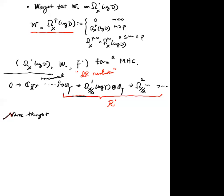The naive W-filtration candidate: define W_m on Ω^p_{X/Δ}(log Y)|_Y as the image of W_m Ω^p_X(log Y) restricted to Y. However, after some computation one can verify that the Gr^W_0 part of this R-complex actually resolves the singular central fiber C(Y). For it to be a mixed Hodge complex, the Gr^W part with induced Hodge filtration must be a pure Hodge complex. But it resolves the singular fiber, so there is no hope of putting a Hodge complex structure on the Gr^W_0 complex. This naive candidate is not good.